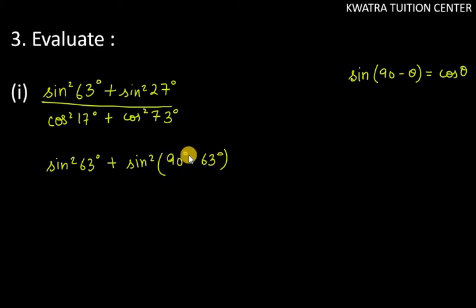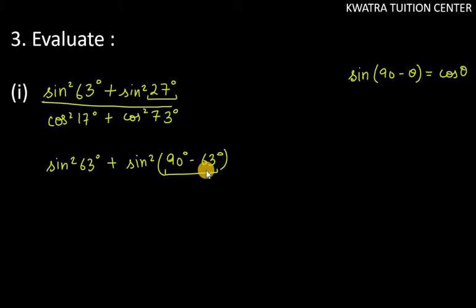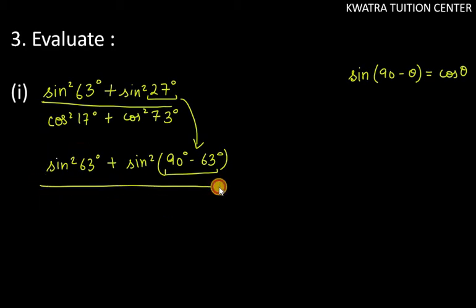Some of you write 90 minus 27, but you will not get the correct angle. You should write 90 minus 63, then you get 27. So the angle you substitute should always match the angle you are replacing. Then we write cos square 17 degree as it is.